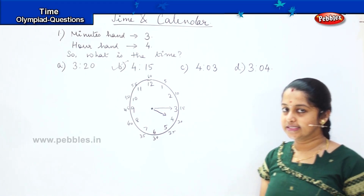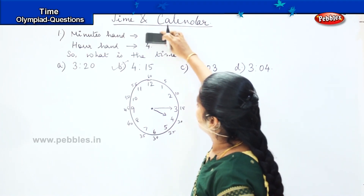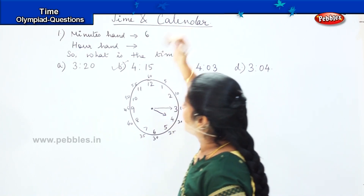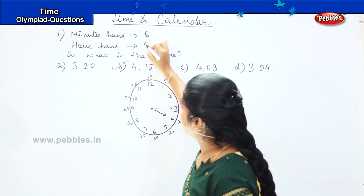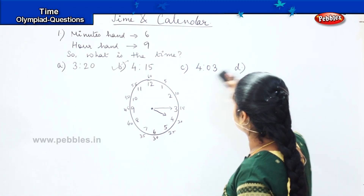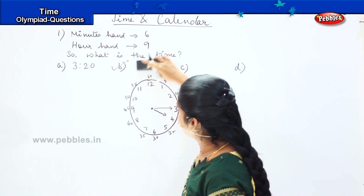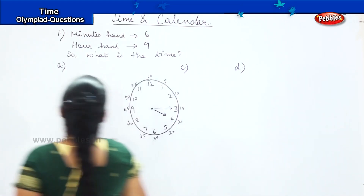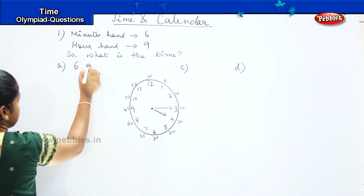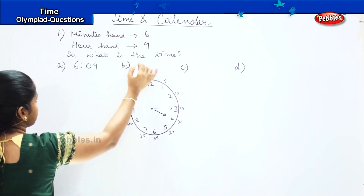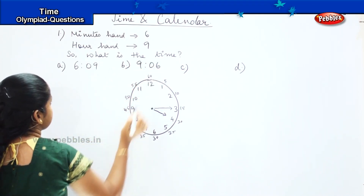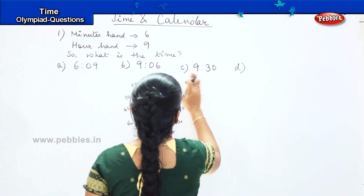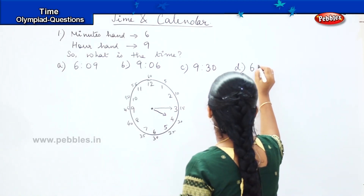Shall we do some more sums like this? Okay. Now another question: my minutes hand is in 6 and my hour hand is in 9. I will change the options now, so let us see how far you are able to tell me this answer. So the options are 6:9, 9:6, 9:30, and 6:45.